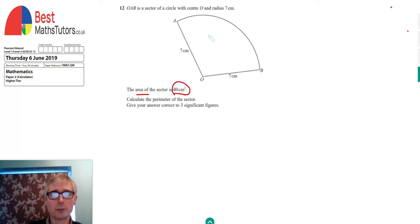First of all we're going to use this area. We need to know the formula for the area of a sector. So the area of a sector is given by theta which is the angle here. It's a letter we can use to represent an angle.